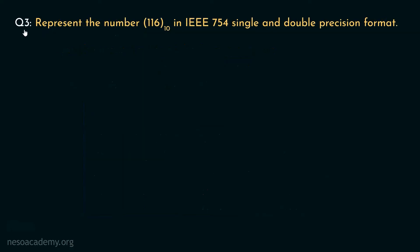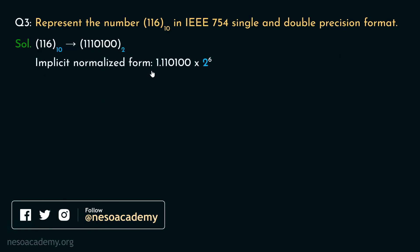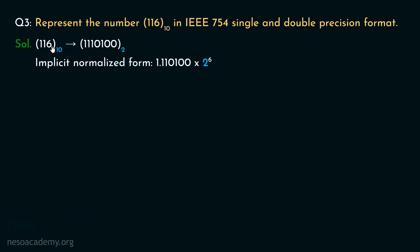Represent the number 116 decimal in IEEE 754 single and double precision formats. 116 in decimal is 1110100 in binary. The implicit normalized form is 1.110100 multiplied by 2 raised to 6. The exponent is 6 because the radix point must move 6 bit places to the left to reach the right of the first 1 in a 7-bit integer.